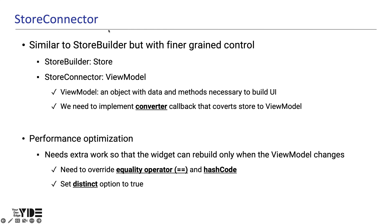The second option is to use the StoreConnector. Similar to StoreBuilder, StoreConnector allows you to access a store from within a widget wrapped in it, but with finer grain control. StoreBuilder passes the store itself to the builder callback. On the other hand, StoreConnector passes the view model needed to rebuild the specific widget to the builder function instead of the entire store. The view model is an object with data and methods necessary to build the UI.